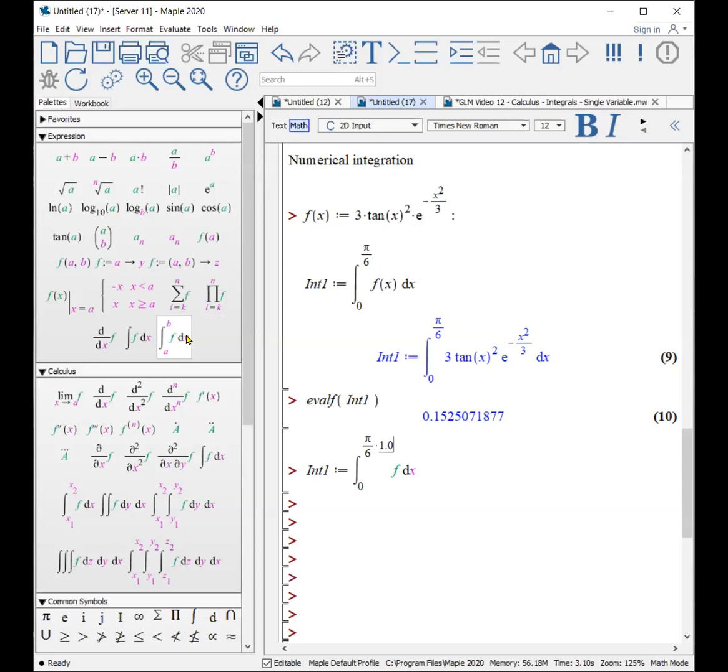And it will do that calculation there. The third way that I tend to do it is actually this way. I say my int value colon equals int. So I'm going to call the int function, which is the function that basically this icon produces.